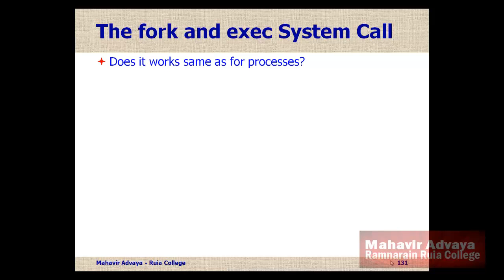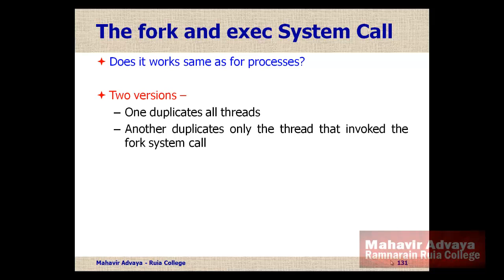We talked about fork and execute system calls in chapter 4 on processes. The question is whether they work the same way for threads. There are different approaches chosen by various operating systems. Unix has chosen two versions of fork: one that duplicates all threads, and another that duplicates only the thread that invoked the fork system call.